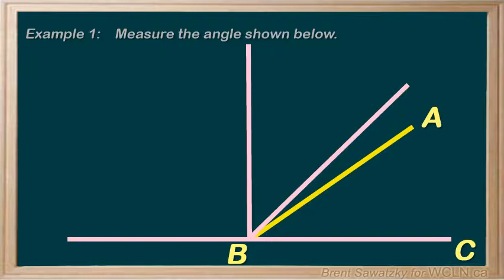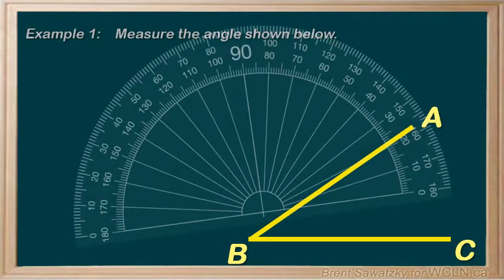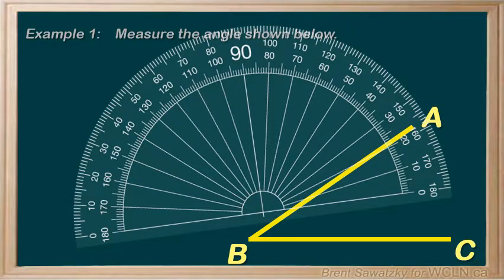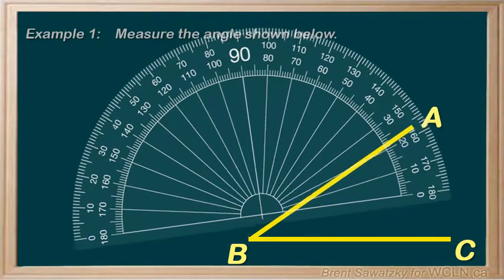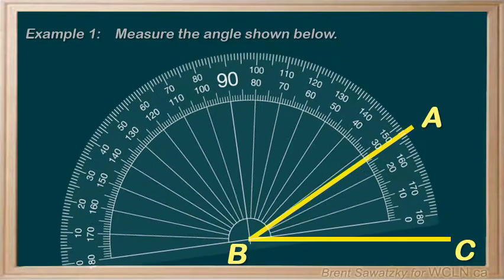So now let's make the more precise measurement with our protractor. So here's our protractor. And we move the protractor so that the midpoint of the protractor is right on our angle's vertex, the point B in this case, and we line them up.